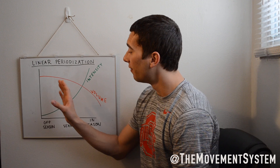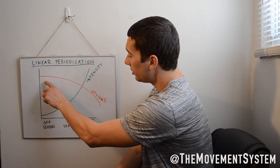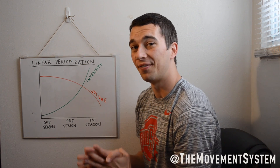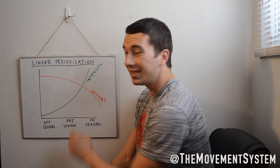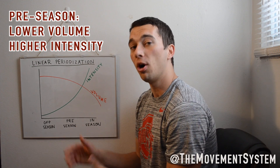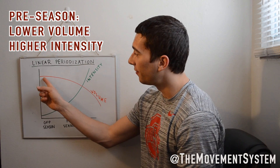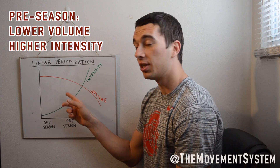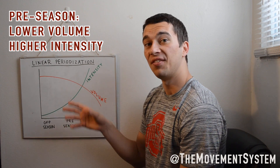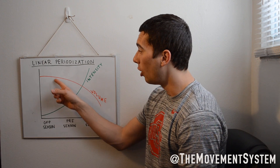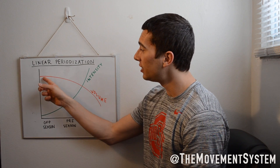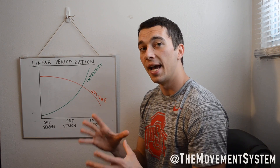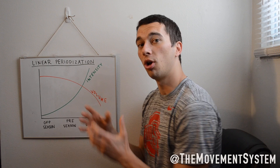As we move from the offseason to the preseason, volume is going to decrease a little bit. Say offseason we were doing three sets of 15 goblet squats — as we move to preseason we might load up a barbell. So if three sets of 15 goblet squats is at 50%, now in preseason we're going to go to three sets of ten at 75% on the barbell. Our volume went down from three sets of 15 to three sets of ten, but our intensity went up from 50% to 75%, and that general trend continues across all our exercises.